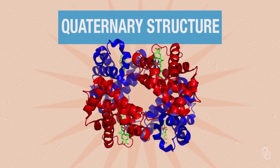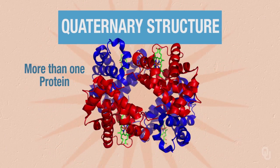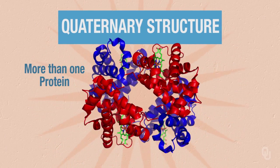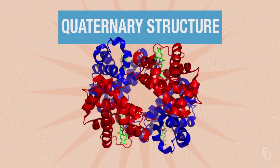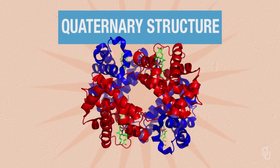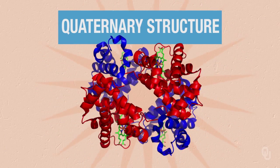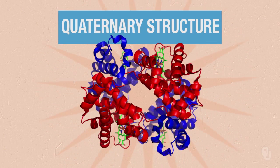The quaternary structure is when we have more than one protein. So if we bring in multiple proteins, they then form an aggregate, and this aggregate would be a quaternary structure. So if we have a single protein chain, we can only get to tertiary structure, and not quaternary.